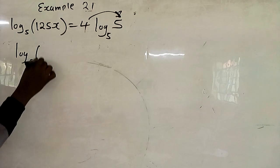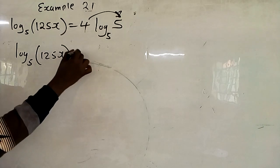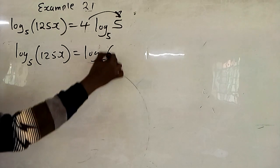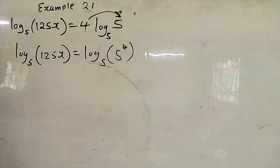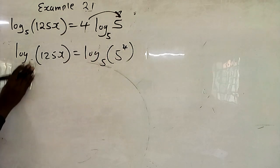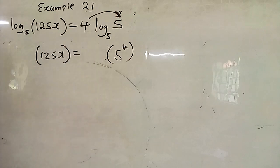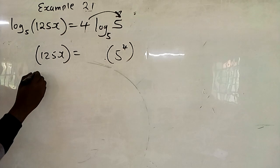So we end up with log to base 5 of 125x is equals to log to base 5 of 5 raised to power 4. Then you ignore log on both sides of the equation. So when you ignore log on both sides of the equation, you remain with 125x is equals to 625.